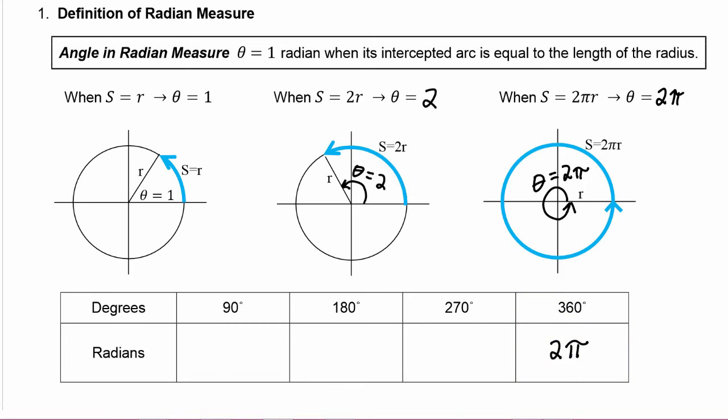So then pretty easy to see half of 360 is 180, so half of 2π would be π.